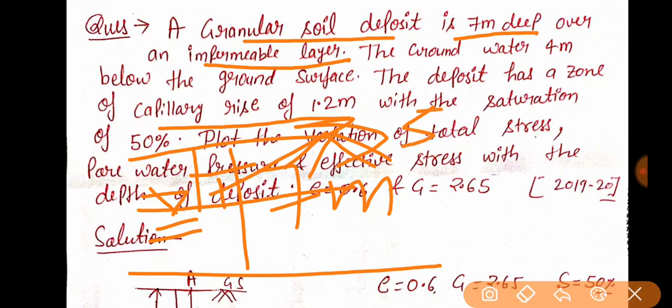It is 50 percent saturation only. So here is the important term of 50 percent. And after that, I am talking about the variation of total stress, pore water pressure, and effective stress with the depth of deposit. The given values are: E (void ratio) = 0.6 and G = 2.65.